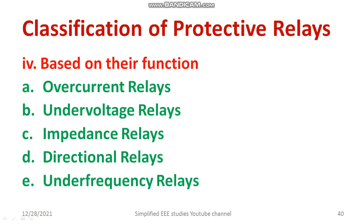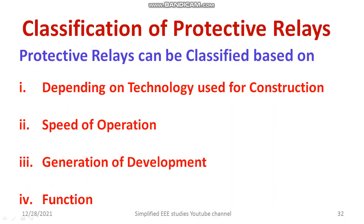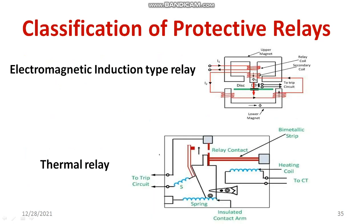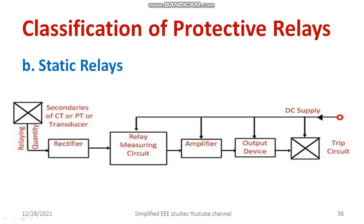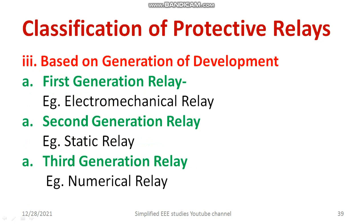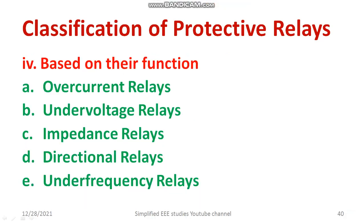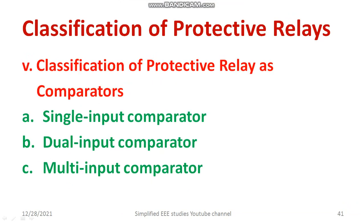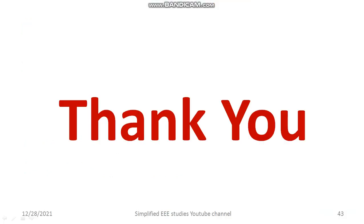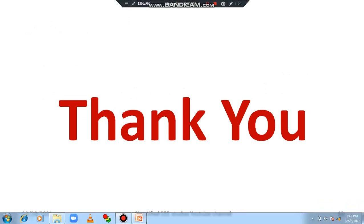In this session, I have mainly discussed the classification of relays based on different criteria. Depending on technology used, we covered electromechanical relay, static relay, and numerical relay. Depending on speed of operation, we discussed four subclassifications. Based on generation of development, three subclassifications were made. Based on functionality, five subclassifications were made. The protective relay also acts as a comparator — single input, dual input, and multi input comparator. This information is from my reference textbook. If you have any queries, please put them in the comment box. Thank you very much for watching this video.